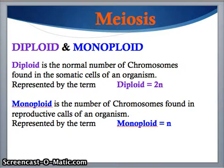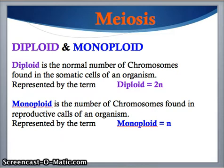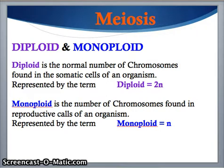We need to understand some key terminology, including the words diploid and monoploid. Diploid is the normal number of chromosomes, represented algebraically as 2n. Monoploid is the number of chromosomes found in reproductive cells — half of the normal number — represented algebraically as n. So diploid is 2n, and monoploid is 1n.